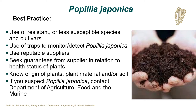Best practice to prevent the introduction and spread of Popillia japonica includes the use of resistant or less susceptible species and cultivars, the use of traps to monitor or detect its presence, and the use of reputable suppliers. Seek guarantees from your supplier in relation to the health status of the plants. Know the origin of the plants, plant material and/or soil. If you suspect the presence of Popillia japonica, contact the Department of Agriculture, Food and the Marine.